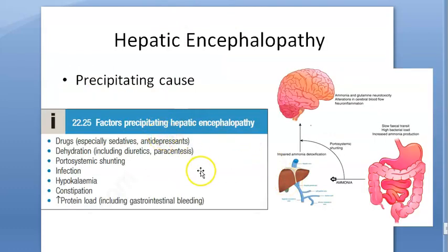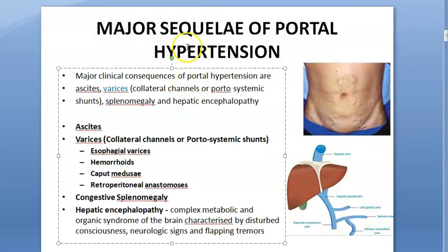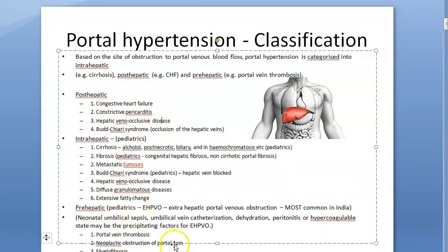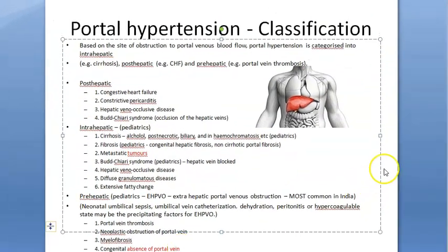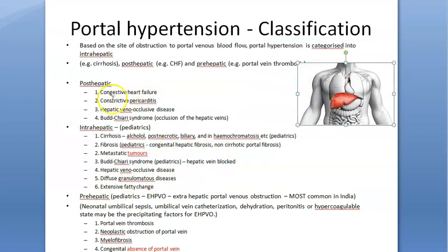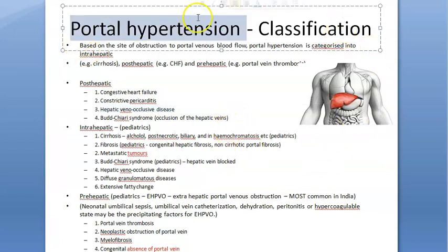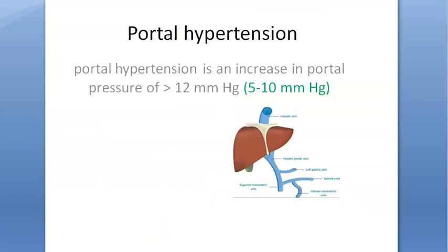The whole problem started because of portal hypertension, so you have to fix that too. Causes of portal hypertension to address include obstruction in the portal vein, neoplasm in the portal vein, Budd-Chiari syndrome (hepatic vein blockage), cirrhosis, fibrosis of the liver, congestive heart failure, pericarditis, and hepatic veno-occlusive disease. In this video you have understood hepatic encephalopathy. Bye-bye.